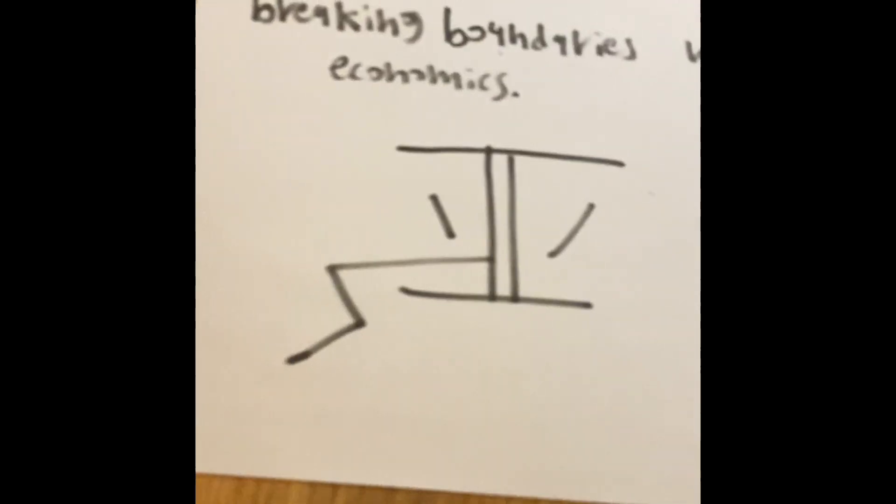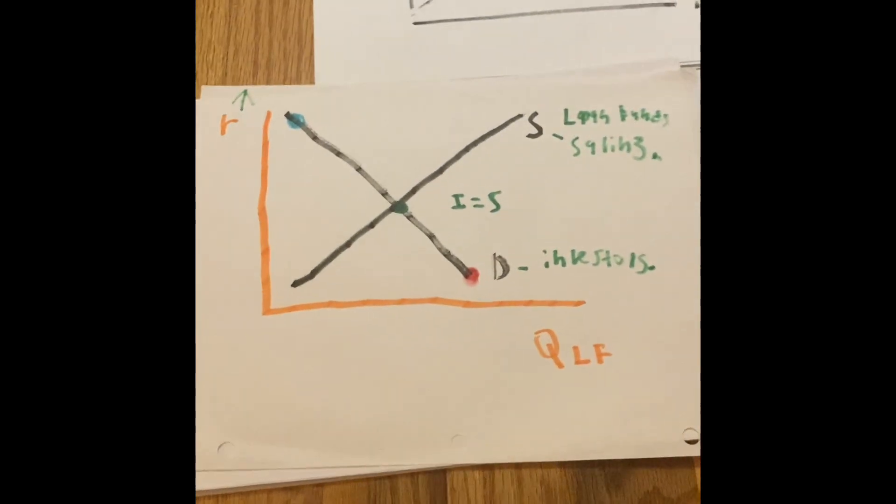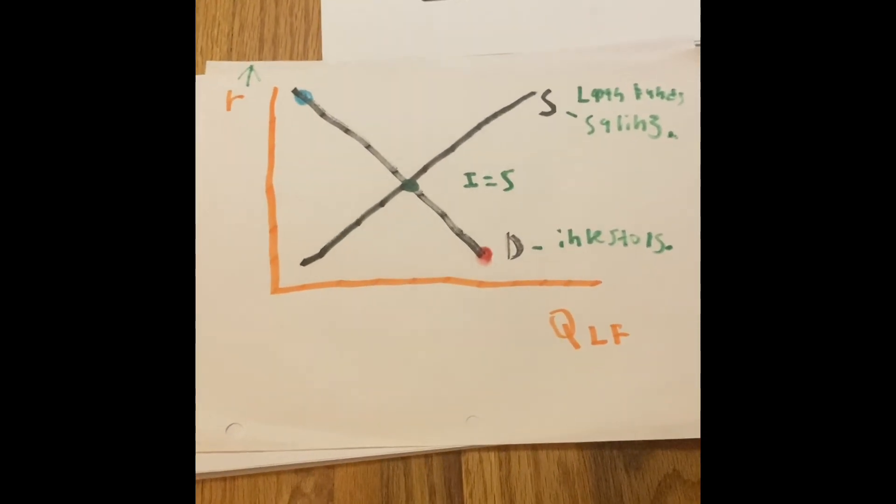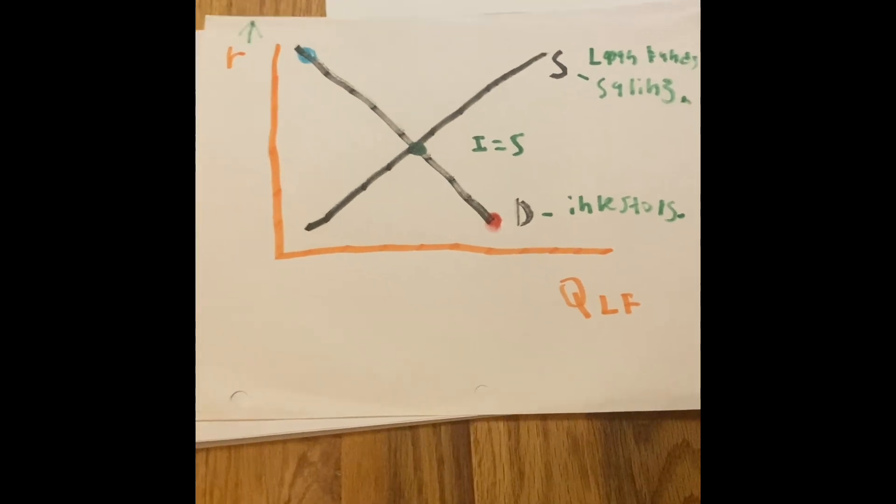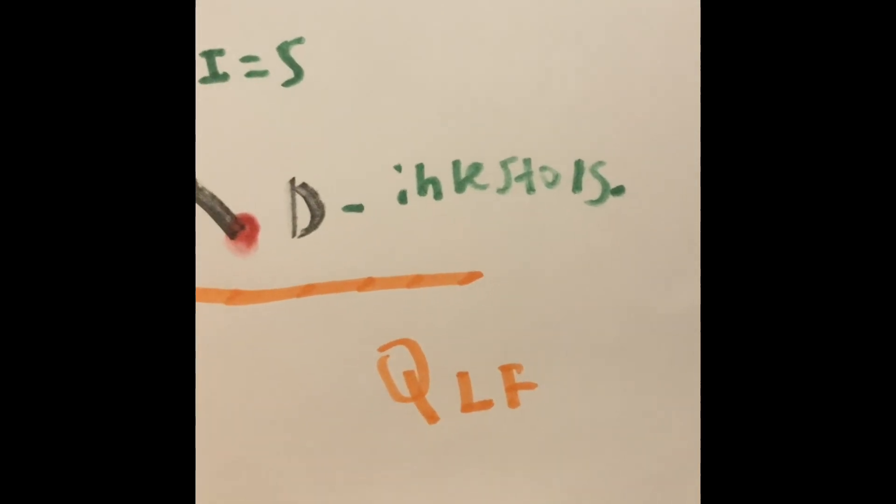We will be using the supply and demand curve graphs, where S represents savings and D represents investors.